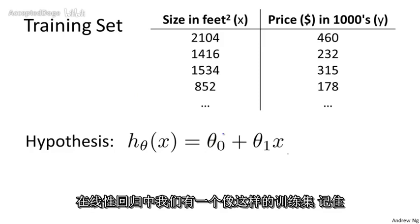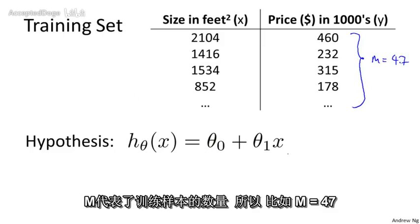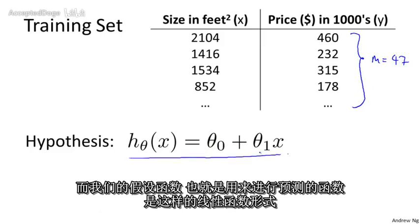In linear regression, we have a training set like that shown here. Remember our notation, m was the number of training examples, so maybe m equals 47. And the form of our hypothesis, which we use to make predictions, is this linear function.